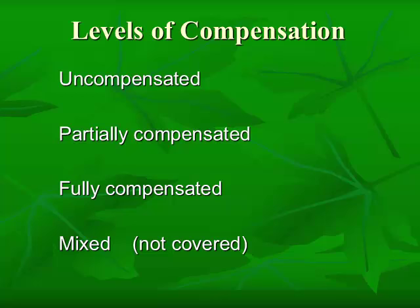With uncompensated, one of the lab values — either carbon dioxide or bicarb — is still within normal limits because it has not started shifting. In partially compensated, all three values — the pH, the bicarb, and the CO2 — are all out of normal range. With fully compensated, the body's attempt has been able to bring the pH back to normal, so you may have an abnormal CO2 and an abnormal bicarb, but your pH is within normal limits. That is your key: even though the other two are out of normal ranges, your pH is within normal range.